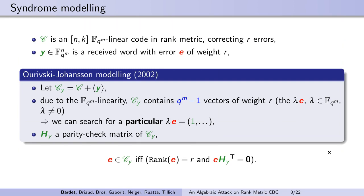We will now address the algebraic modeling of this decoding problem. We start from the work by Overbeck and Johansson in 2002 and try to solve it using Gröbner basis techniques following Levy-dit-Vehel and Perret in 2006. We add the word we want to decode to the public code. Then, thanks to the F_q^m linearity, the code C_y contains q^m vectors of weight r that are all multiples of E for any lambda in F_q^m that is non-zero. If the error was small enough, the code C_y contains no other small rank vectors.